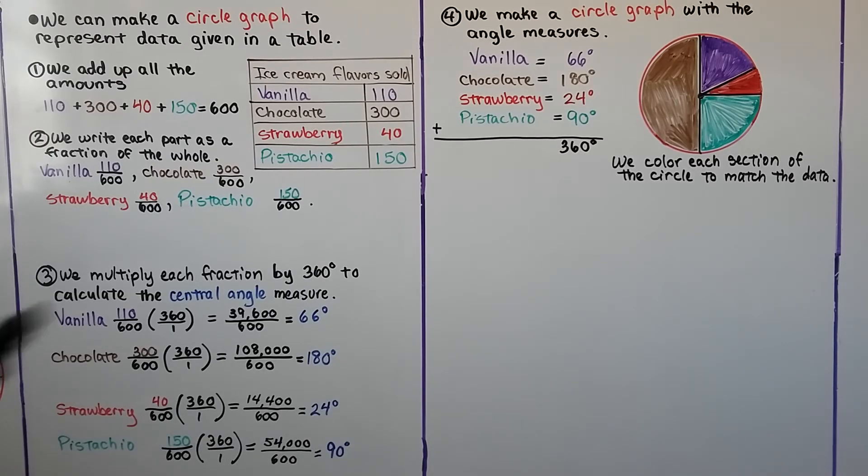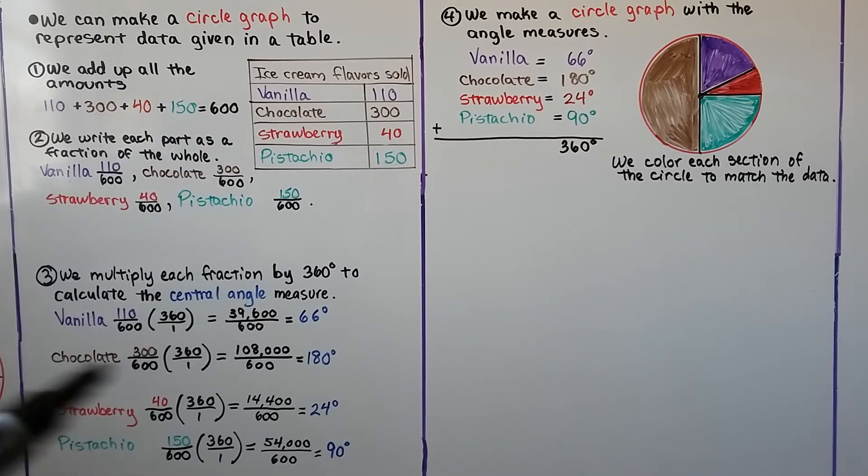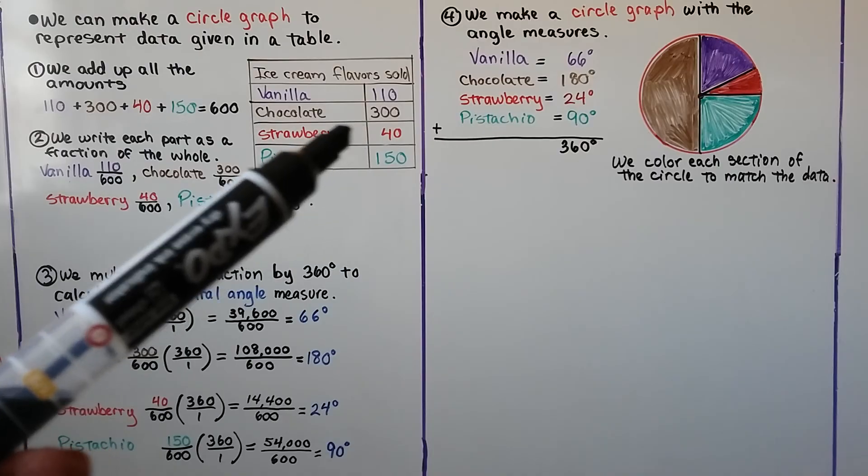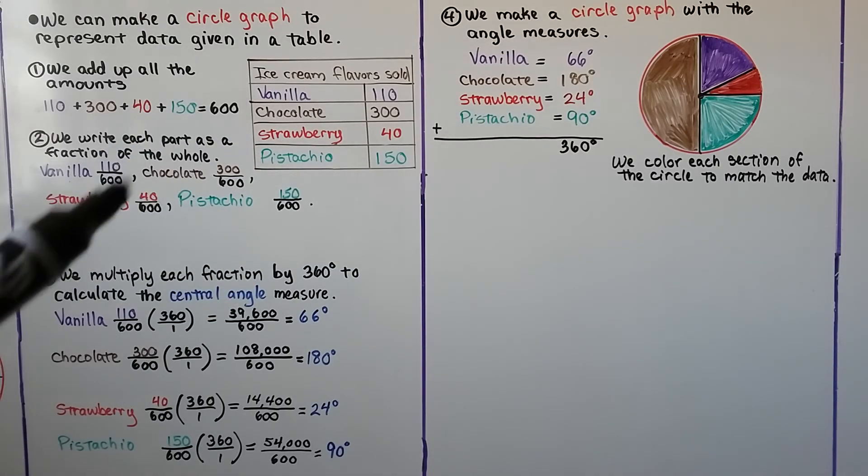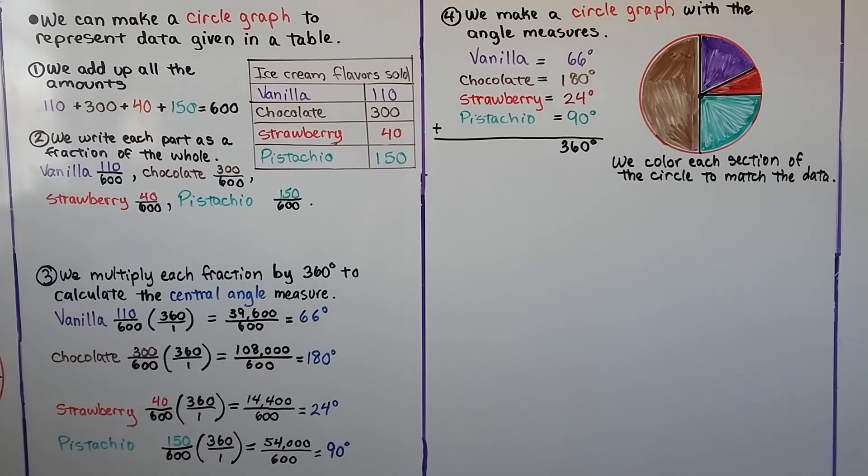So a real quick recap. We look at the information from the table. We total them up to get a whole amount. We write that information from each separate one over the total, the whole. We get a fraction. We multiply each fraction by the 360 degrees of a circle. And we do our little division. And we get the degrees of the central angle that is going to represent that piece of data. We make our circle graph. We measure those degree measures with our protractor and color in the section of the circle that matches the data.